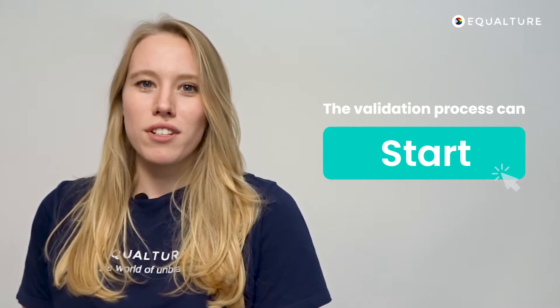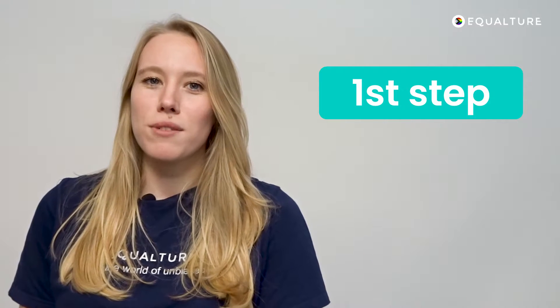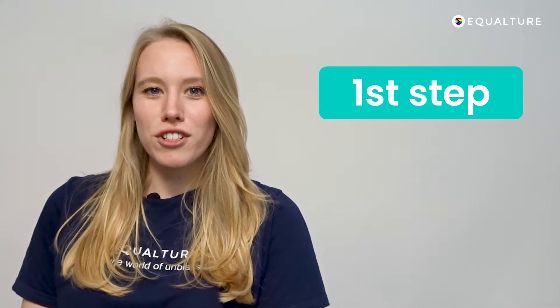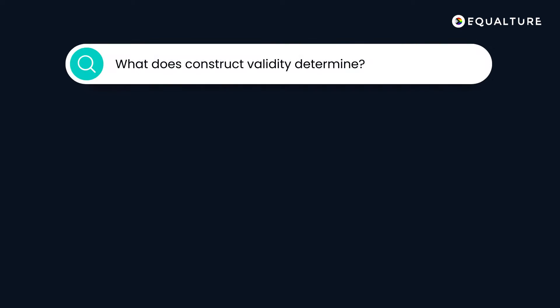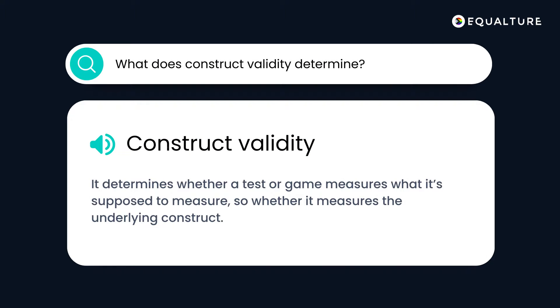After a new game has been developed and tested for usability by the science team and our game developers, the validation process can start. The first and most important step in the validation process before launching the game is testing it for construct validity. Construct validity determines whether a test or game measures what it's supposed to measure — so whether it measures the underlying construct.